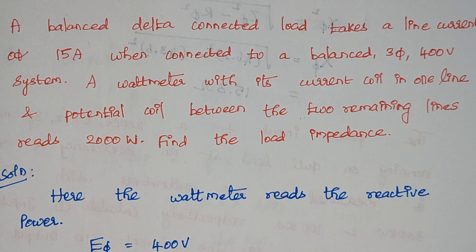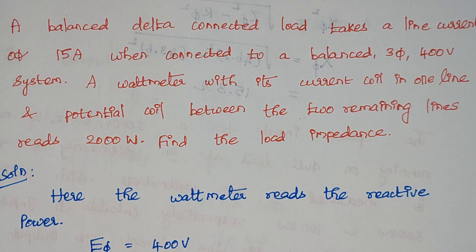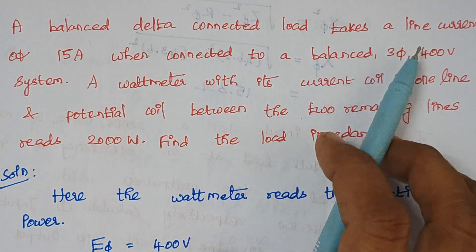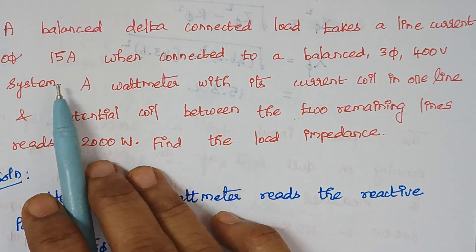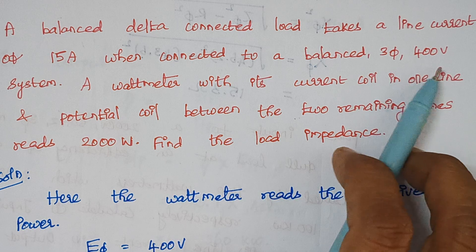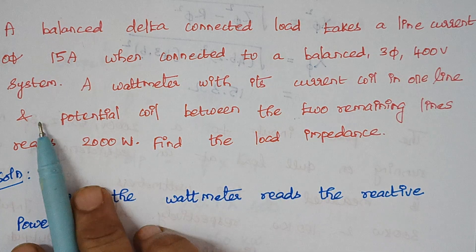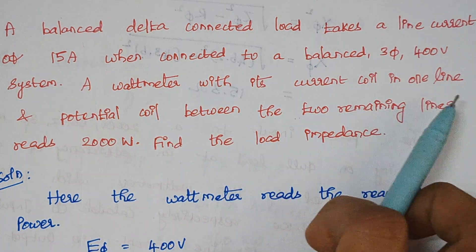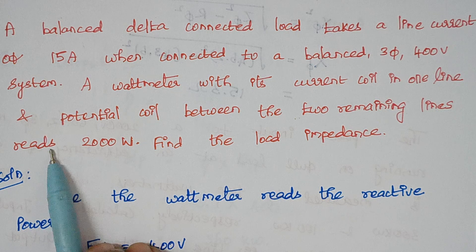Hello viewers, I'm Kausalia. Today we are going to solve problems related with wattmeter measurement. The problem is: a balanced delta connected load takes a line current of 15 amps when connected to a balanced three-phase 400 volt system. A wattmeter with its current coil in one line and the potential coil between the two remaining lines reads 2000 watts. Find the load impedance.